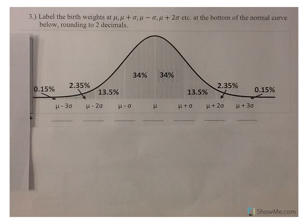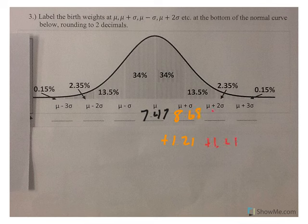We're going to use those to label our normal distribution curve. Based off the empirical rule, right down the middle is our mean, 7.47. I'm going to go to the right first. If we go to the right, we are going to add 1.21. So I end up with 8.68. I'm going to add 1.21 again, and I get 9.89. I'm going to add it again, and I get 11.1.